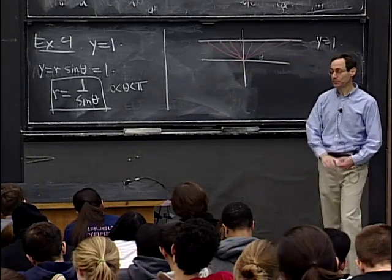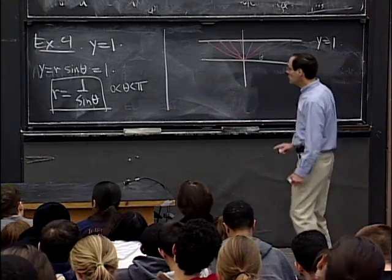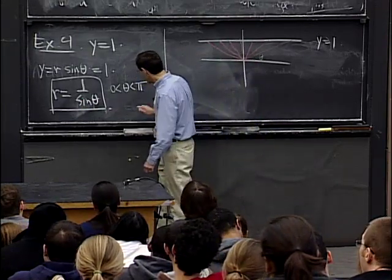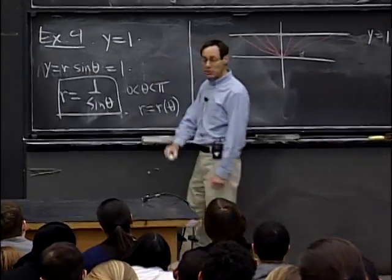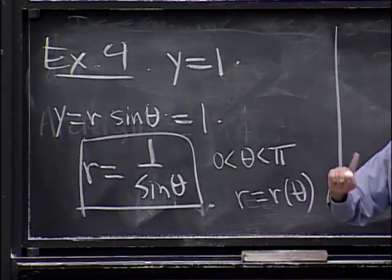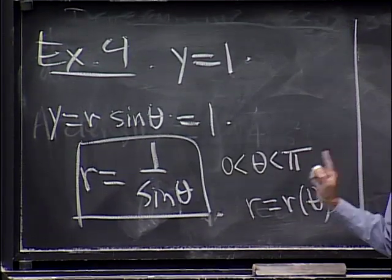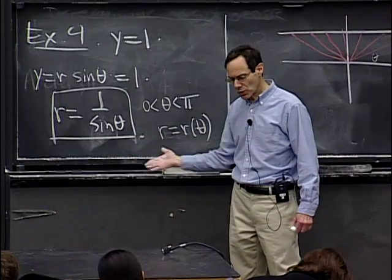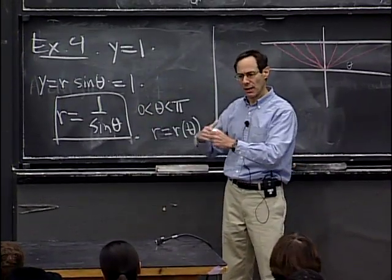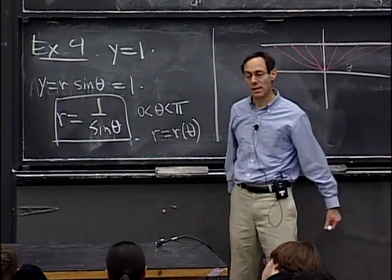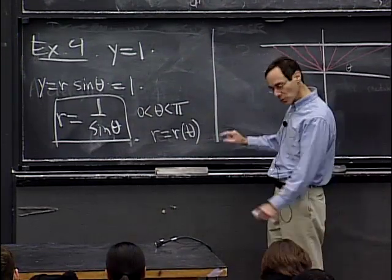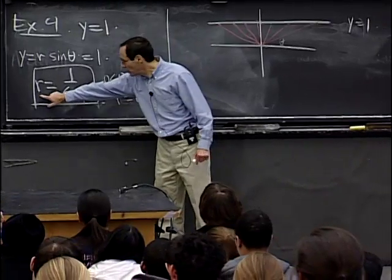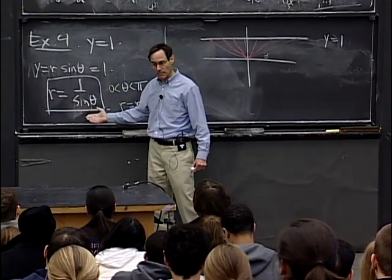A student asked whether it's typical to express r as a function of theta or vice versa. In this course, we almost always write r as a function of theta. This is the traditional approach — think of observing a planet, where you see the angle and estimate the distance. The expressions also tend to be simpler as trig functions of theta rather than inverse trig functions.